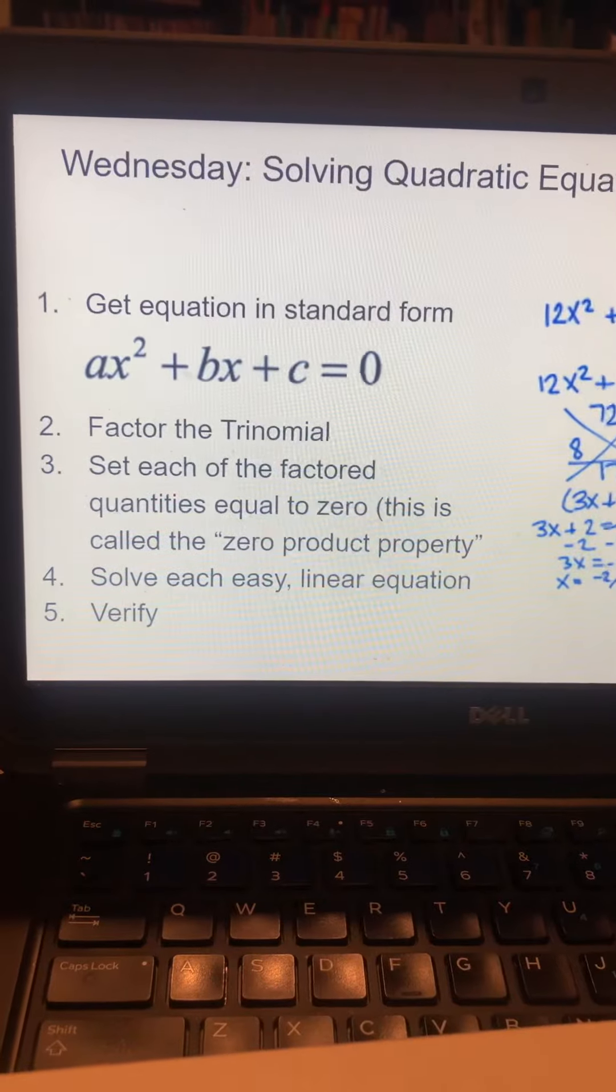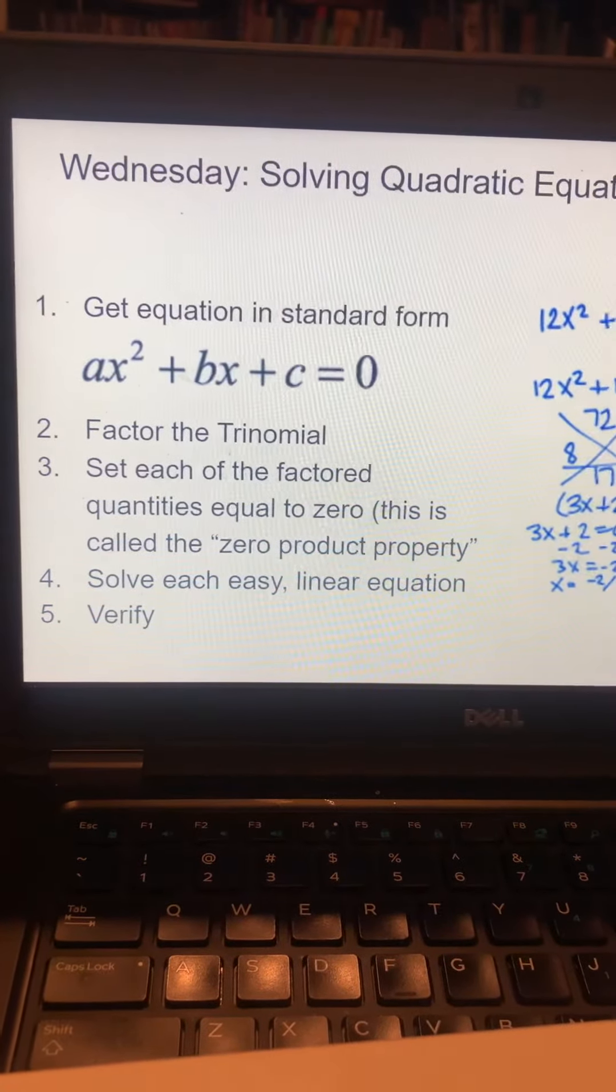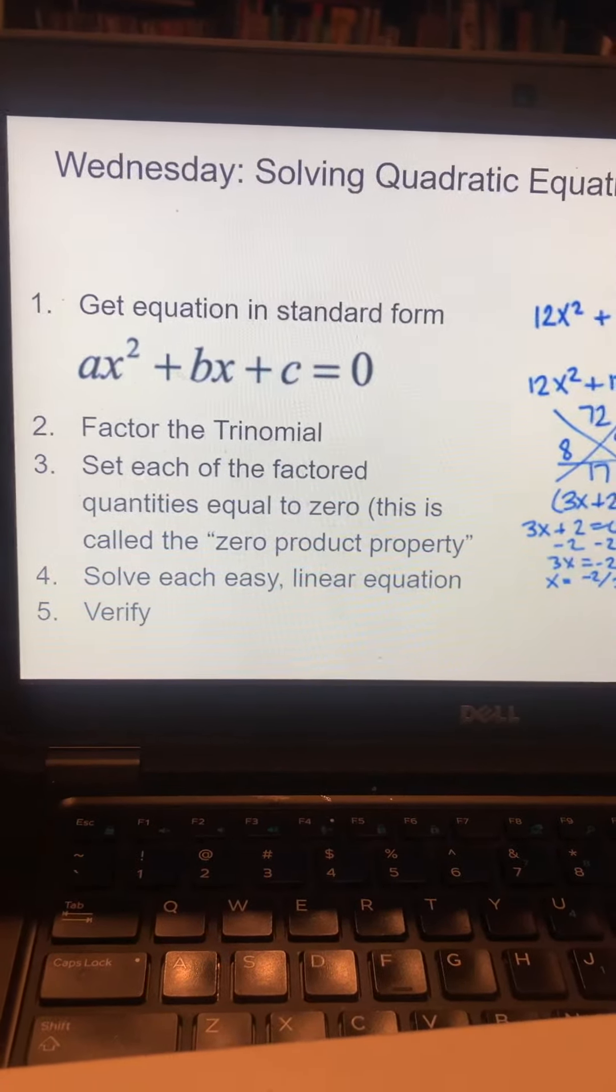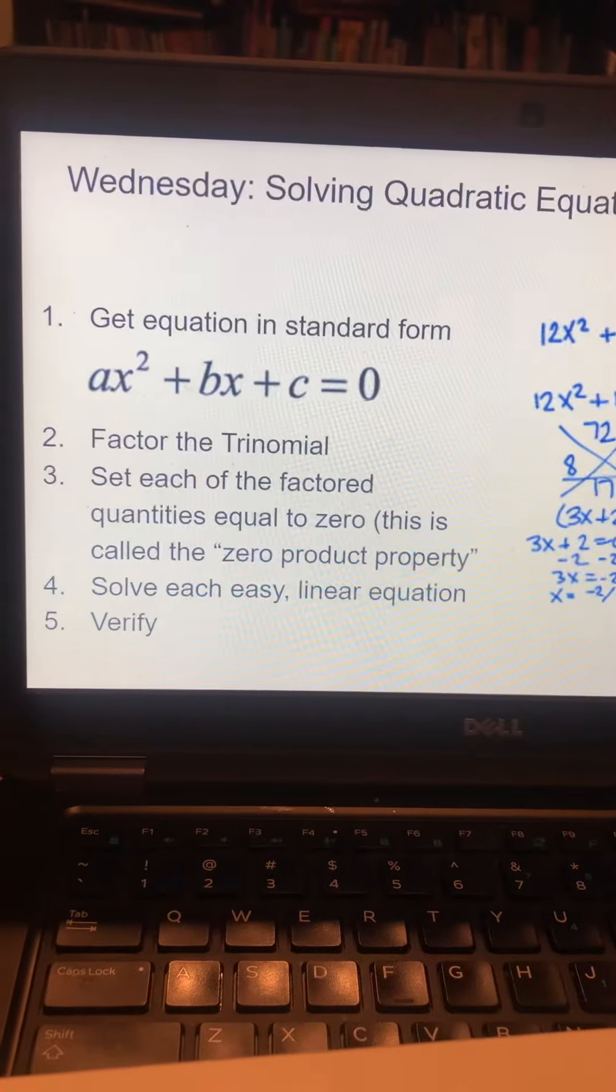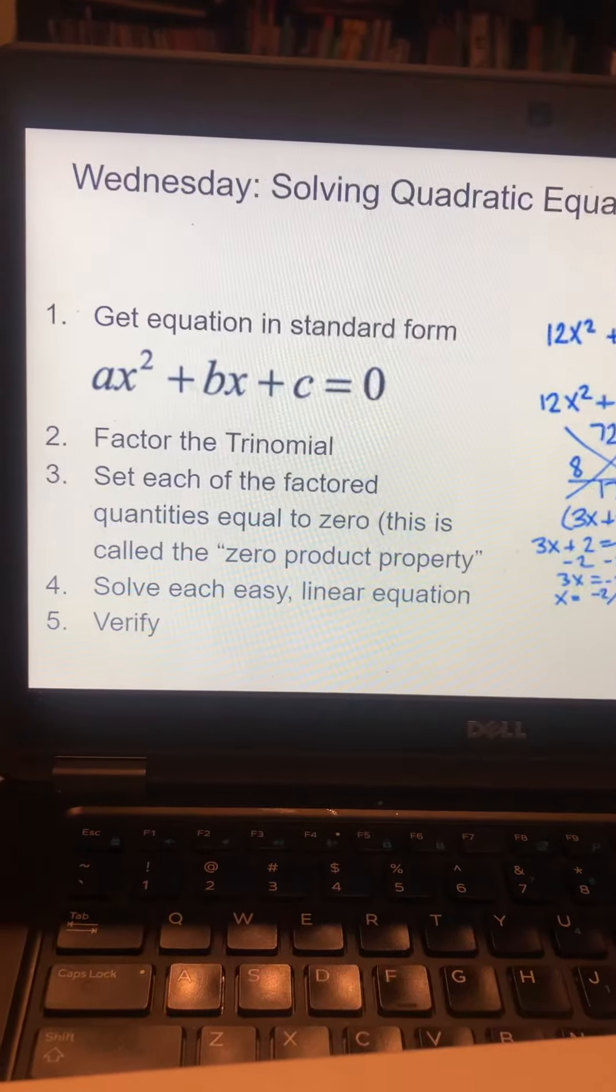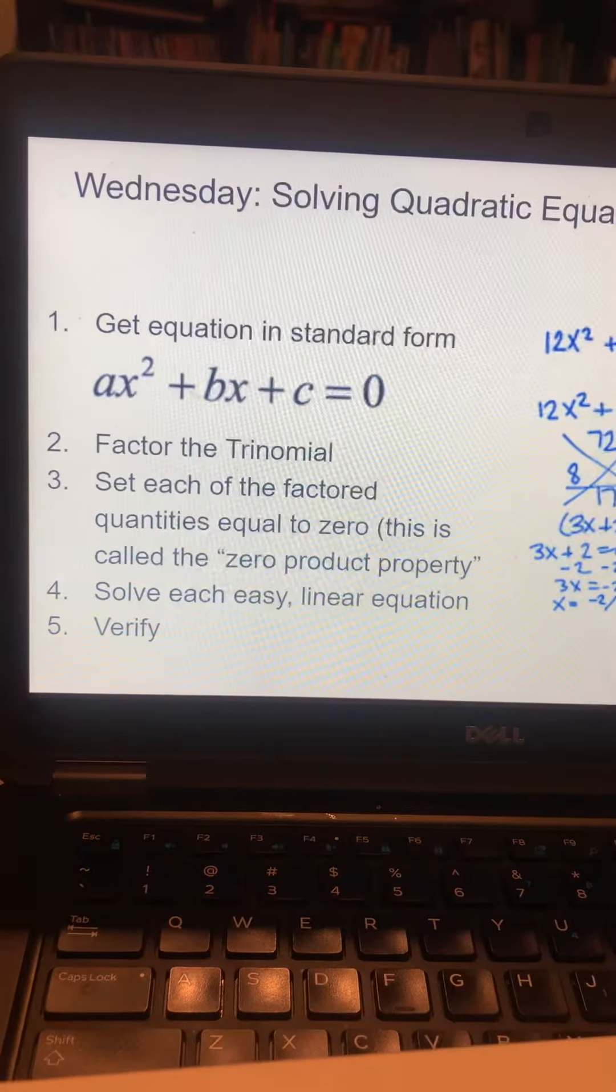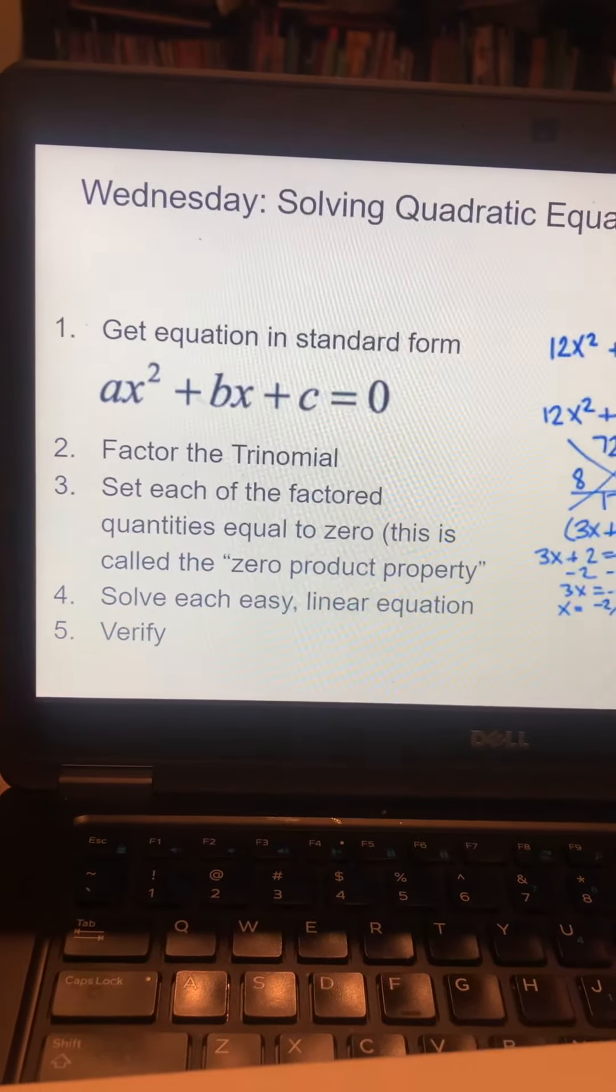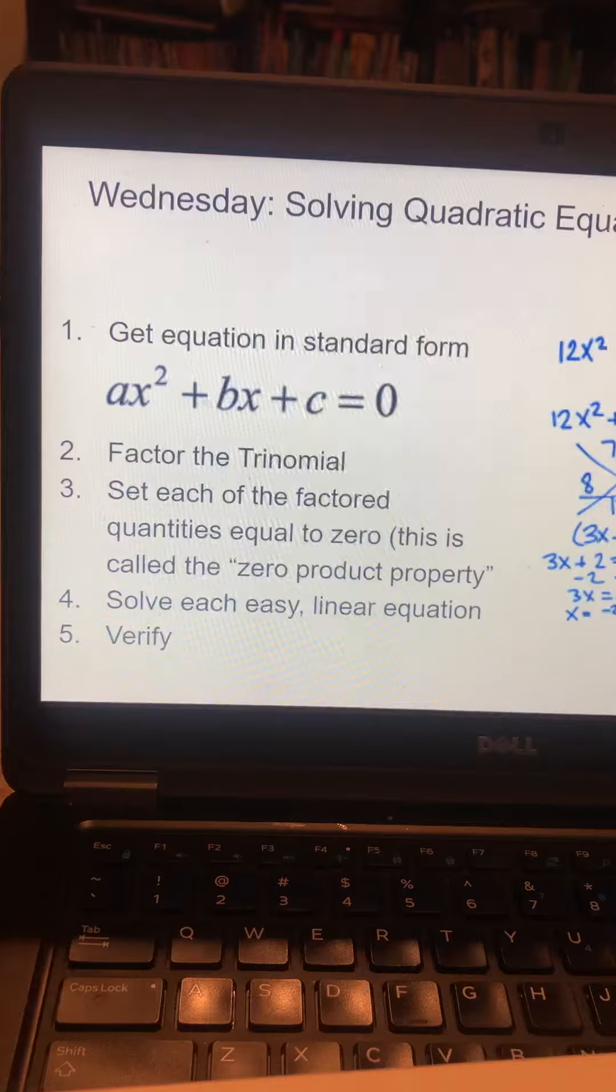After that, we factor the trinomial. Once we've got the trinomial factored into two quantities, we set those two quantities separately equal to 0. This is called the zero product property, which says if two things multiply together equal 0, then one of those things, or both of those things, must equal 0.